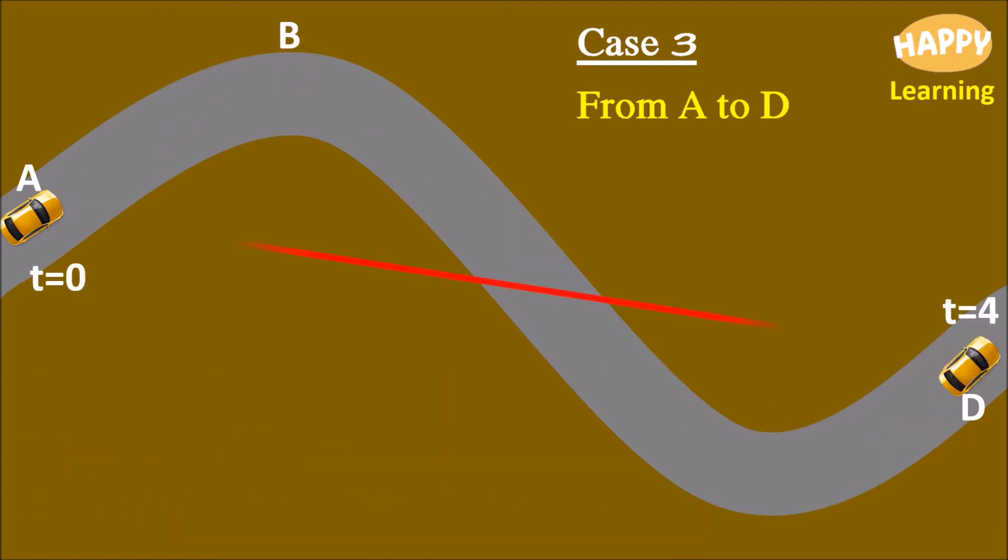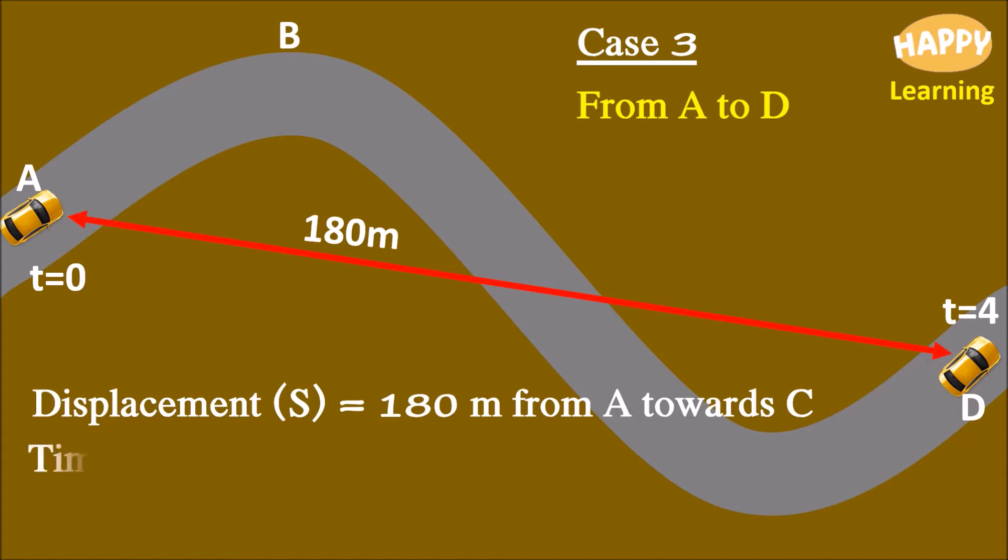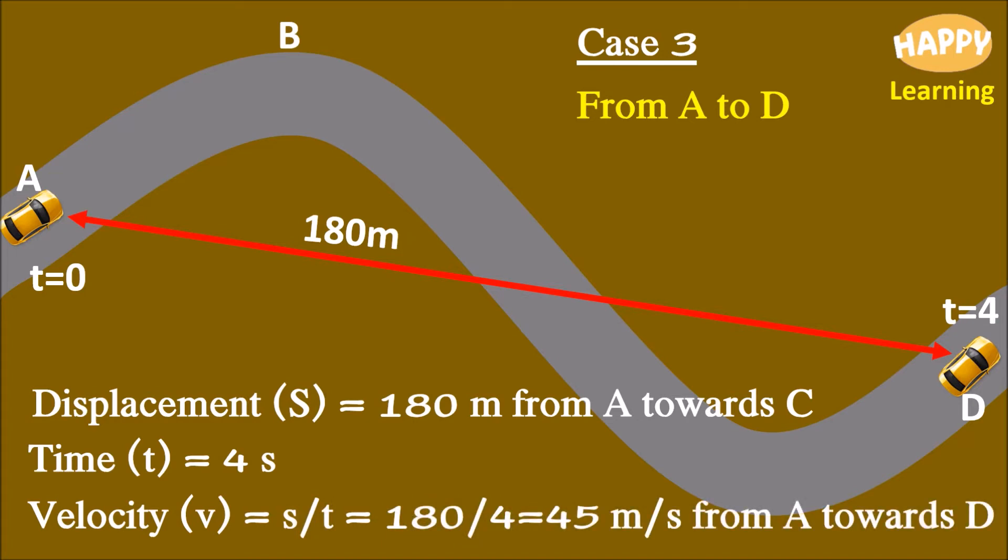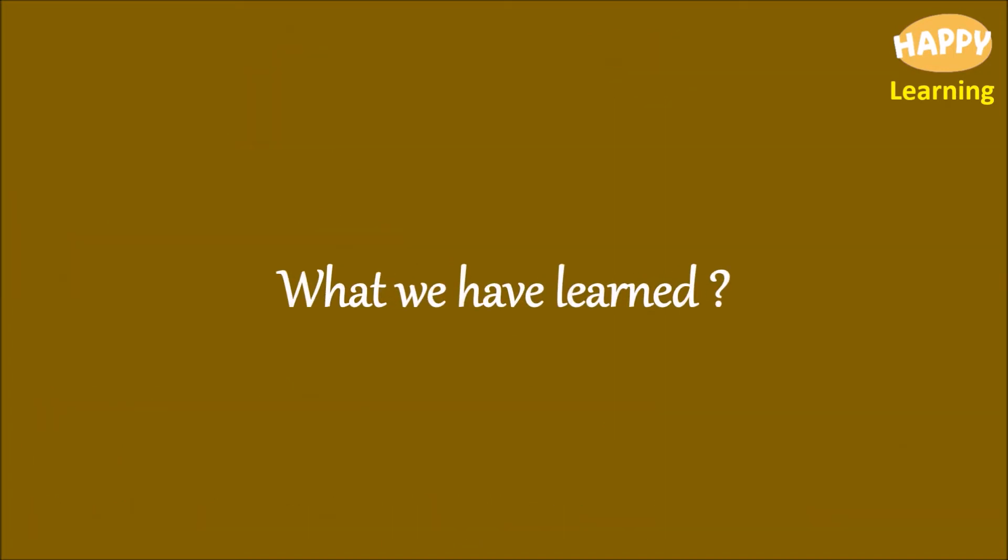The shortest distance between A and D is 180 meter. Therefore, displacement is equal to 180 meter from A towards C. Time travel is equal to 4 seconds. Velocity is equal to 45 meter per second from A towards B. What we have learned?